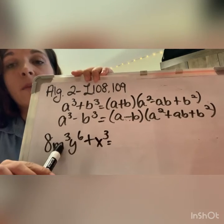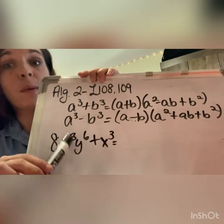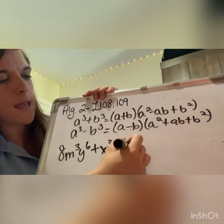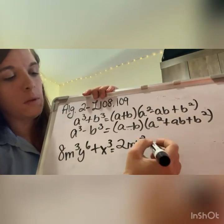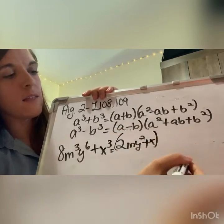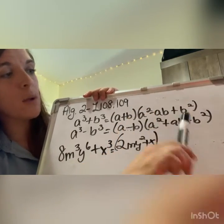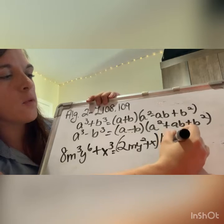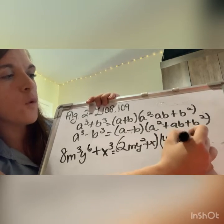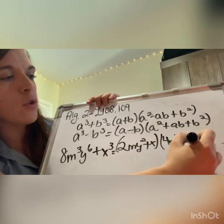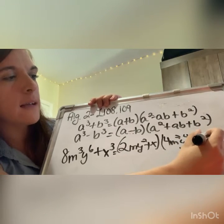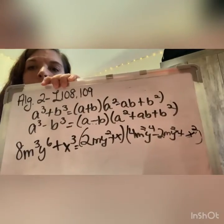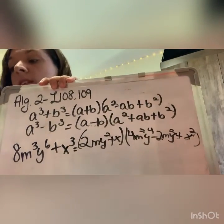Cube root of 8 is 2. m to the third is m. y to the sixth: six divided by three is two, so y squared. What's my a? Two m y squared, plus x. That's my a and b. We're using the plus, so watch out because there's a negative that you have to keep an eye on. a squared is four m squared y to the fourth, minus ab: two m y squared times x, plus b squared which is x squared. That's how you do the sum of cubes.